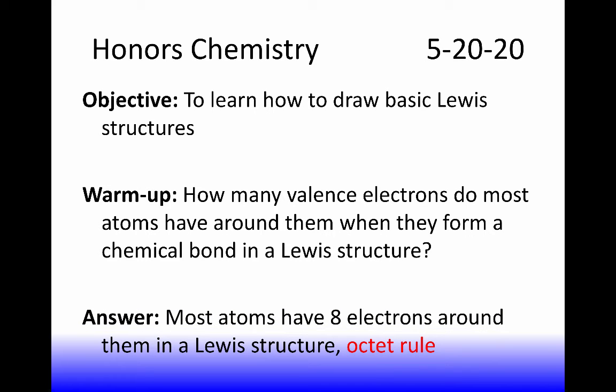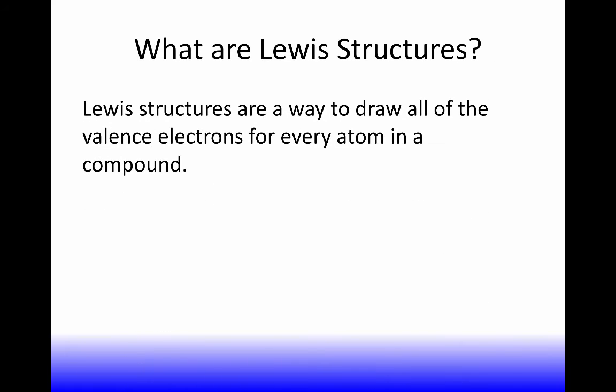The answer is most have eight electrons around them in a Lewis structure. Because there are eight electrons arranged in four pairs usually around an atom, we call this the octet rule, octet for eight. There are exceptions. The main exception is hydrogen. It only has two electrons around it. So for hydrogen, we call it a duet rule, as you'll see.